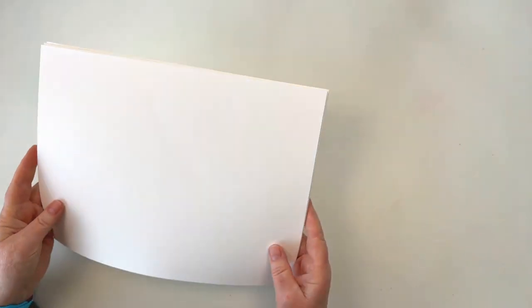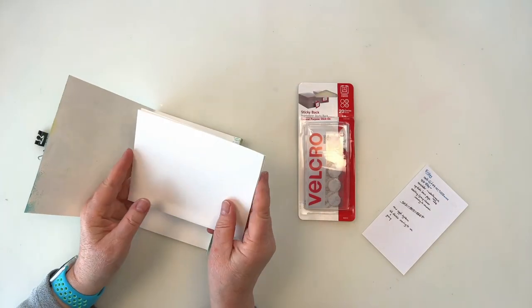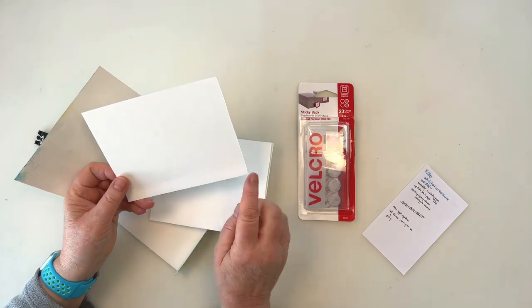For this example I'm going to start again from 9 by 12 paper because that's a common size. You can obviously do this with other sizes. And I've cut my paper into quarters so that the sheets are four and a half by six.